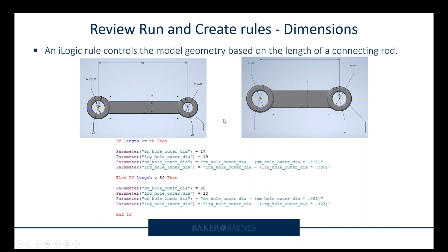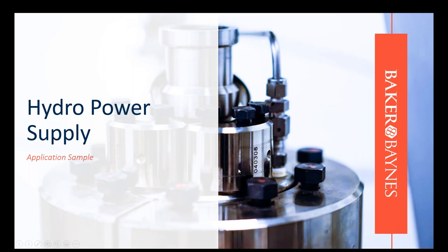Let's verify the rule was applied correctly: for length less than or equal to 80, small hole outer diameter should be 17 — yes it is — and large hole outer diameter should be 19. For length greater than 80, small hole outer diameter should be 20 and large hole outer diameter should be 23 — and yes, that is correct.